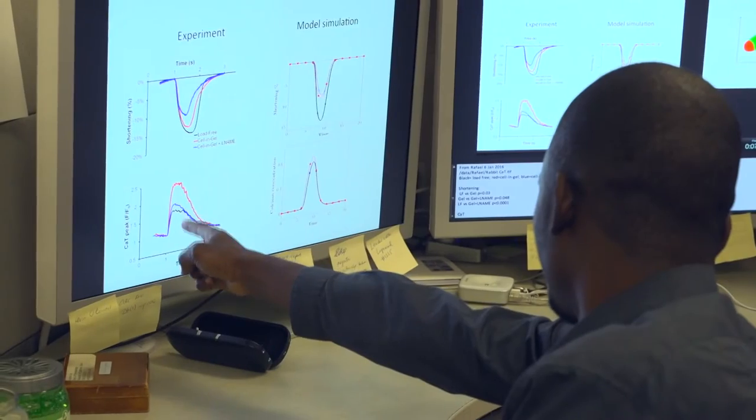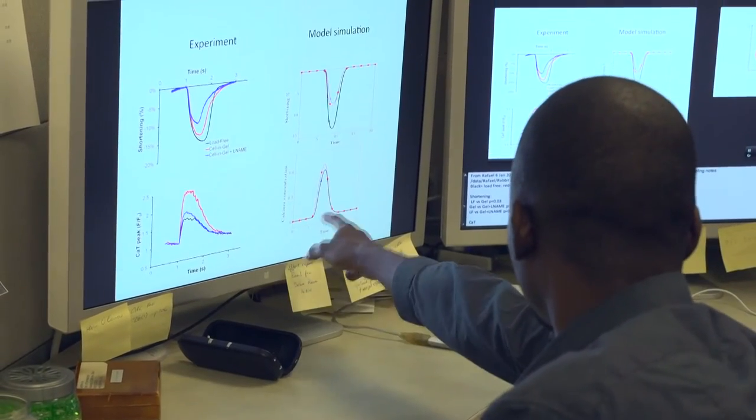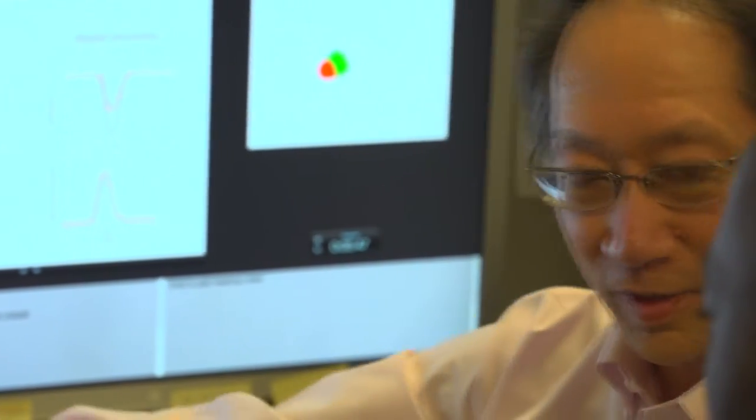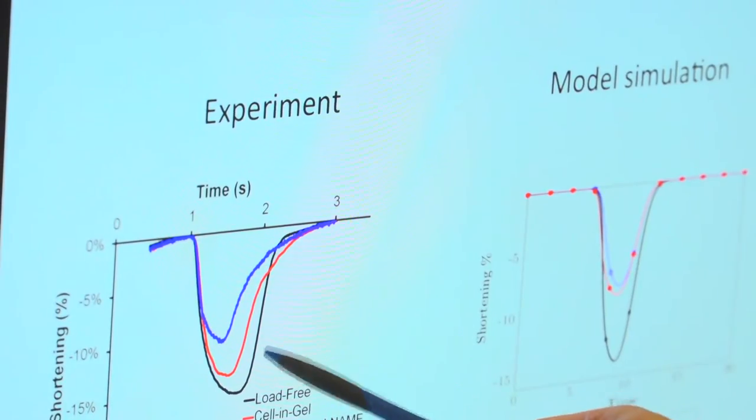The experimental part of the lab looks at trying to get fundamental descriptions of each of the subsystems. What we do in the computational part of the lab is to put all these subsystems together and try to see how they all behave when they're interacting with each other. As a mathematician I'm trying to describe how each part interacts with each other, how each one influences each other, and what is the emergent behavior that comes from this interaction.